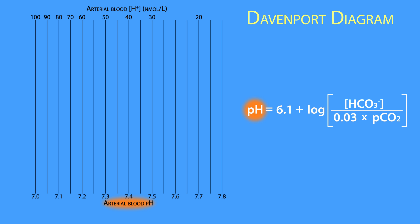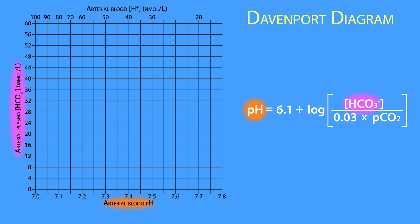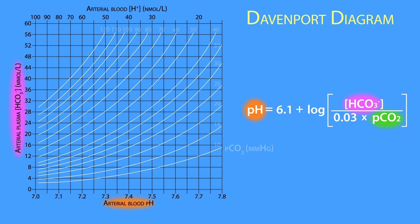The hydrogen ion concentration ranges from 100 to almost 10 nanomoles per liter. The arterial bicarbonate concentration is plotted along the y-axis, ranging from 0 to 60 millimoles per liter or milliequivalents per liter. Finally, the partial pressure of the arterial carbon dioxide is plotted within the graph, ranging from 120 to 10 millimeters of mercury.